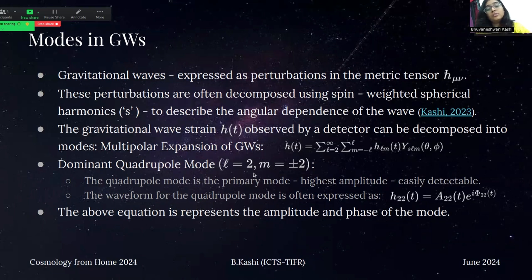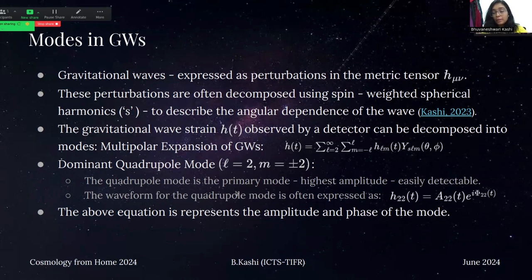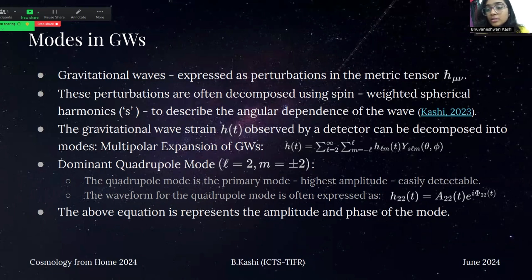The dominant mode of gravitational waves is the quadrupole mode, where l=2 and m=±2. The quadrupole mode is the primary mode and has the highest amplitude, so it's easily detectable by many detectors. The waveform is modeled as H_22, which depends on the amplitude and phase of the mode.